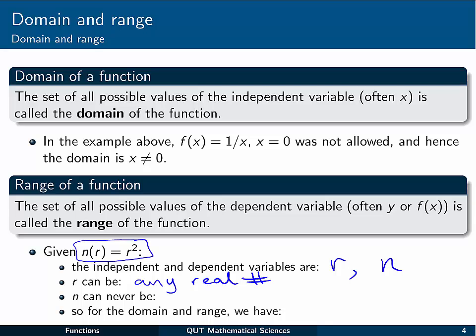n on the other hand, the output value, or the function value, it'll never be a negative value, because we're just getting the r squareds. So if r was 0, we'd get 0. If r was any positive number, we'd get a positive value. And if r was a negative, we square that, we'd get a positive as well. So n can never be negative.